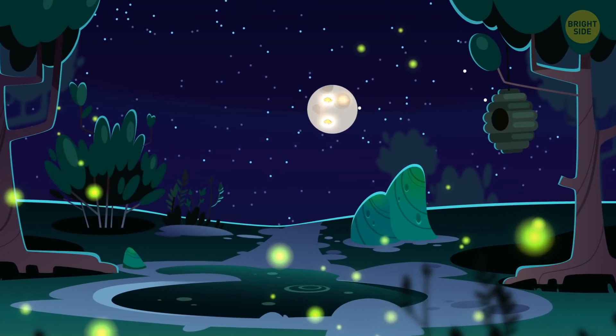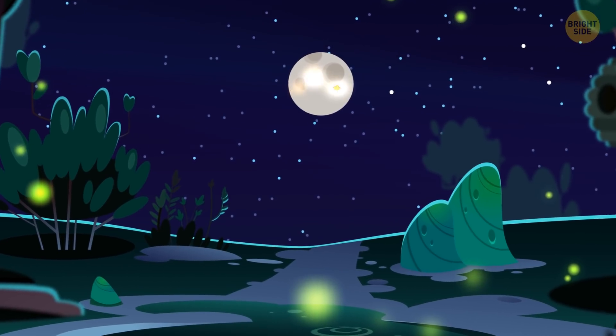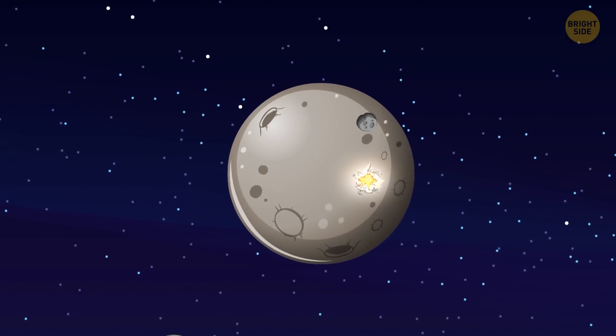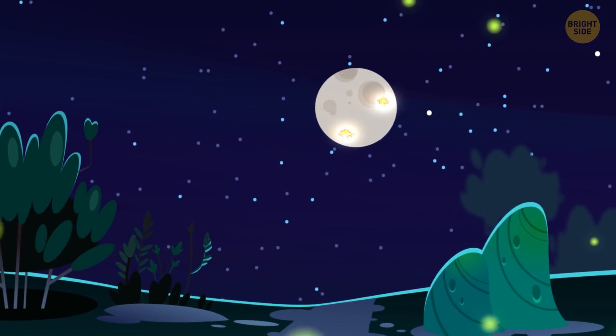If we lived much earlier, we might have witnessed constant bright flashes on the Moon's surface. All the craters there are formed by such meteor strikes. So imagine the fireworks that were there years ago.